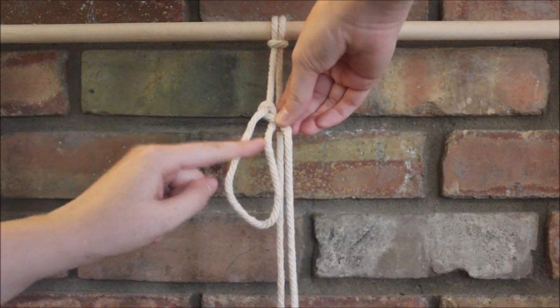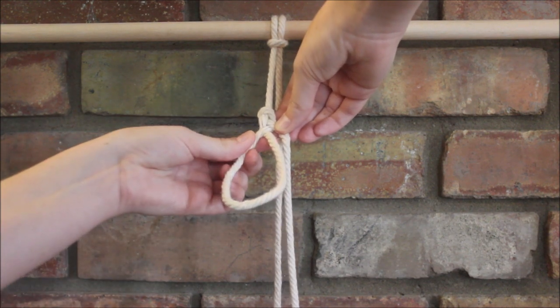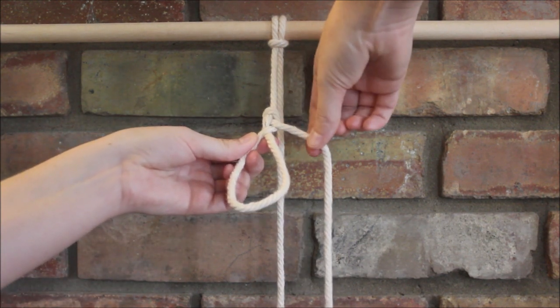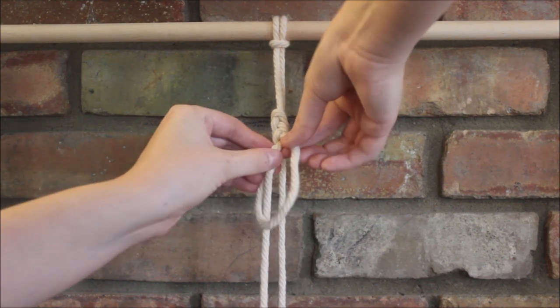Then we're going to take our loop and just twist it around itself. Then we take our rope and we send it under and through the loop.